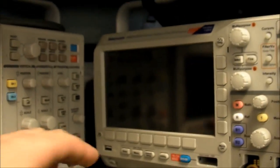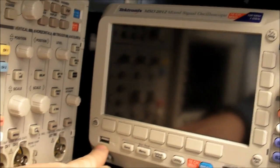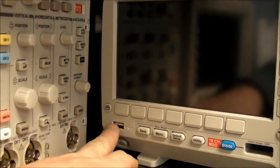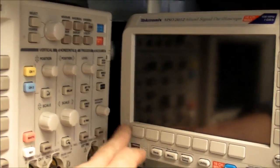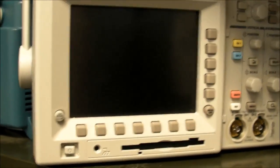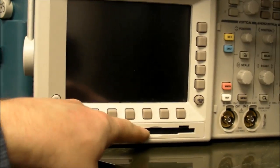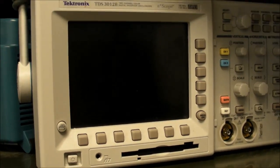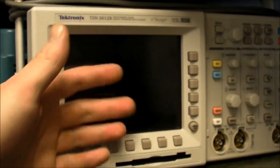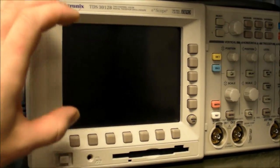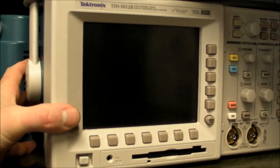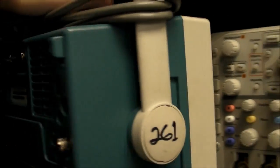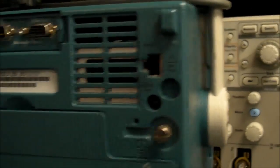And another thing to note is that with the newer scopes we have this nice convenient USB port here for saving data on the USB thumb drive, but the older scopes only have the floppy disk drive in there. And so when the students use these things it's always a struggle to save the screen shot and put that onto their computer so they can put it into their lab report or whatever.